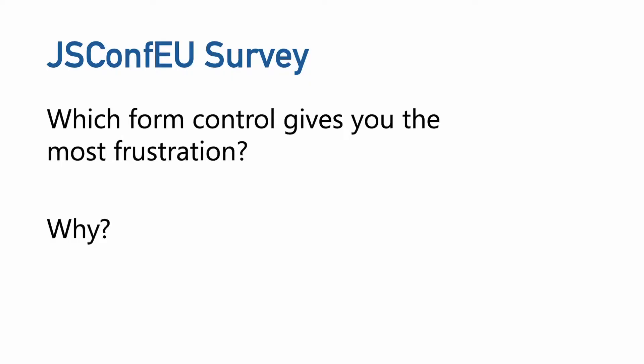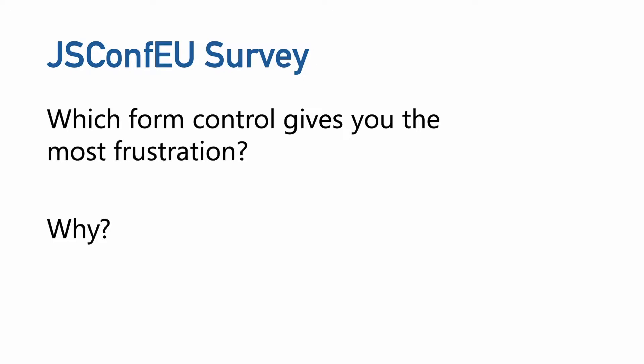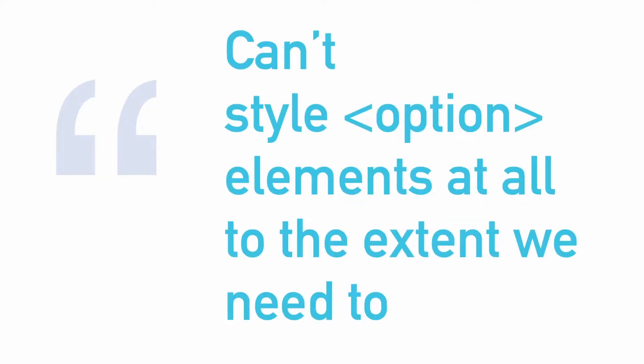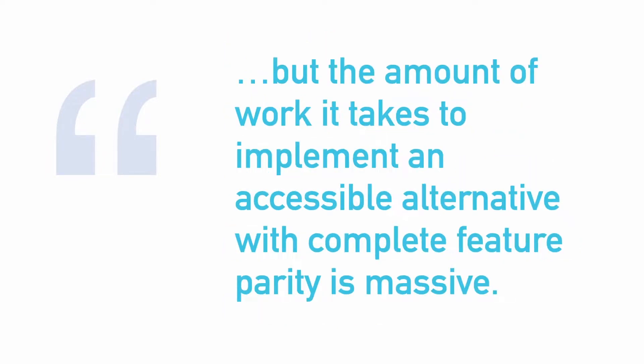Greg shared an amended survey with JSConf EU attendees in 2019 and asked two additional questions: which form control gives you the most frustration and why? Select clearly stole the show, with nearly 50% of respondents saying select. The next closest was date at 17.3%. Some of the verbatims from that survey about select were: 'Select requires hacky tricks,' 'I can't style the option elements at all to the extent we need to,' and 'the amount of work it takes to implement an accessible alternative with complete feature parity is massive.'